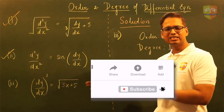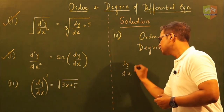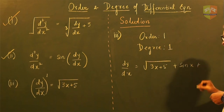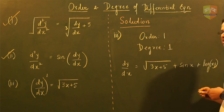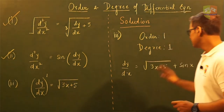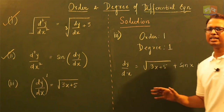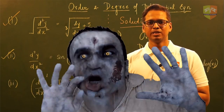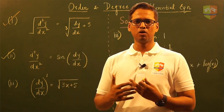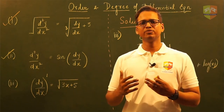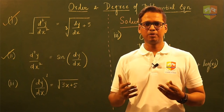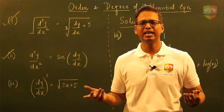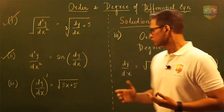As an extension, consider dy/dx = √(3x+5) + sin(x) + log(xy). The degree is still 1, because the sine, root, and log terms have no bearing on deciding the degree — they are on the independent/dependent variables. The key is that the differential coefficients themselves must be in polynomial form; no fractional or negative powers should be on any differential coefficient.